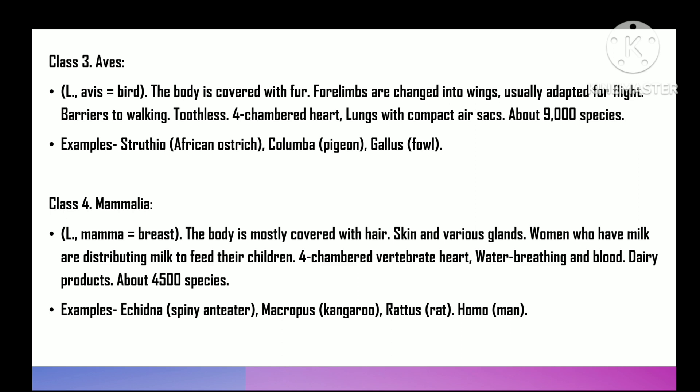Class 3 is Aves — 'avis' means bird. Body covered with feathers, four limbs modified as wings, usually adapted for flight. Hind limbs for walking, perching, or swimming. No teeth, beak present. Heart four-chambered, lungs compact with air sacs, warm-blooded. About 9000 species. For example, Struthio (African ostrich), Columba (pigeon), and Gallus (fowl).